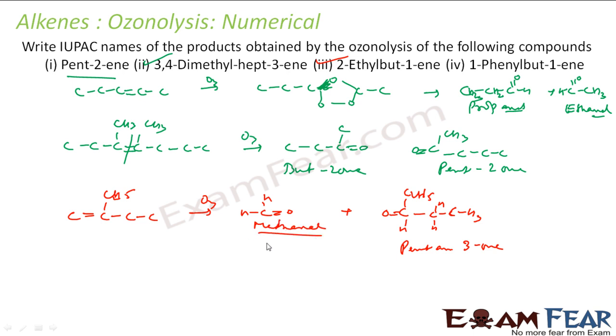Similarly, the next is 1-phenyl-but-1-ene: one, two, three, four, bute. At first I have ene, and at first I have phenyl group also. This is my compound. You do ozonolysis, you break it at this point. You will get C double bond O here, plus three carbon and oxygen here. This is propanal and this is benzaldehyde.